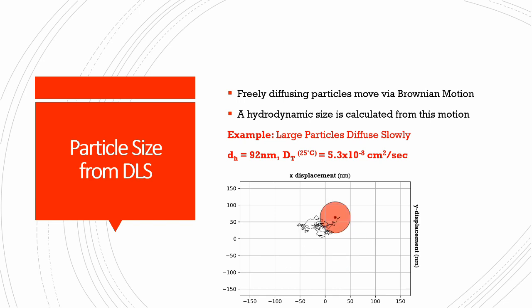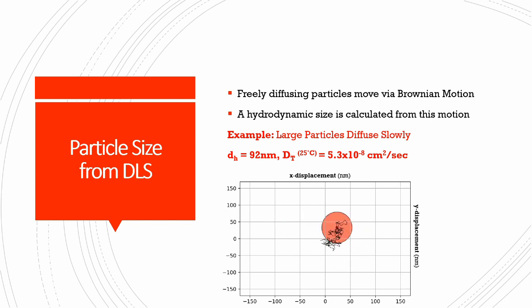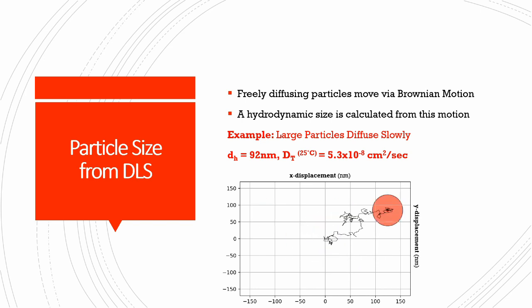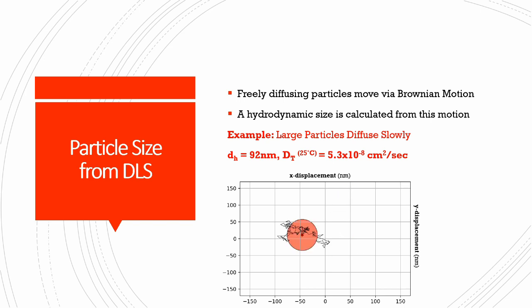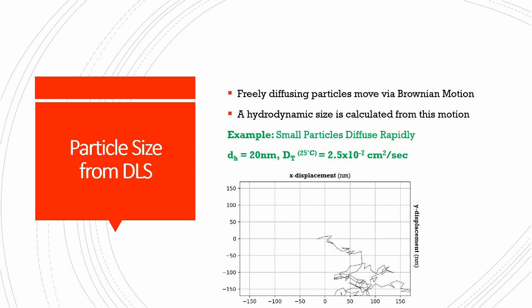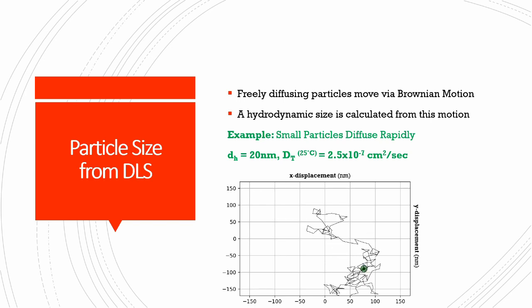Represented here is a large particle — large particles diffuse slowly. For a 92 nanometer particle, comparable to a standard polystyrene latex particle diffusing at 25 degrees Celsius, you have a diffusion coefficient of about 5.3 times 10 to the negative eighth centimeters squared per second. This corresponds to a displacement per unit time. In contrast, a much smaller 20 nanometer particle shows much more rapid diffusion over the same time steps.